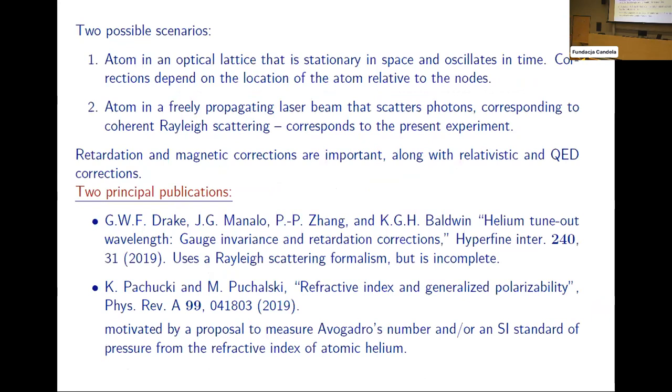So there are two possible scenarios. First, an atom in an optical lattice, and this is the one that's been analyzed in greatest detail because of its connection with high-precision frequency measurement. Here, the scenario is different - it's an atom in a freely propagating laser beam that scatters photons, which gives rise to different kinds of retardation corrections. Two principal publications, both from 2019, with a complete analysis in a paper by Bucholski and Puchalski.